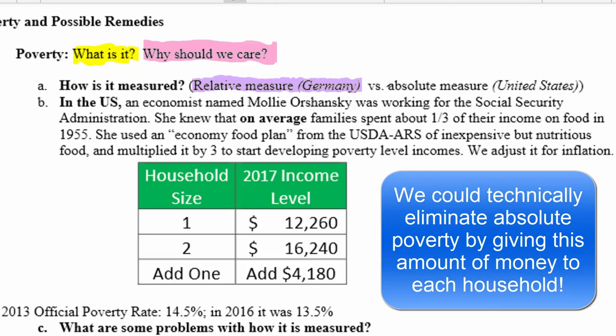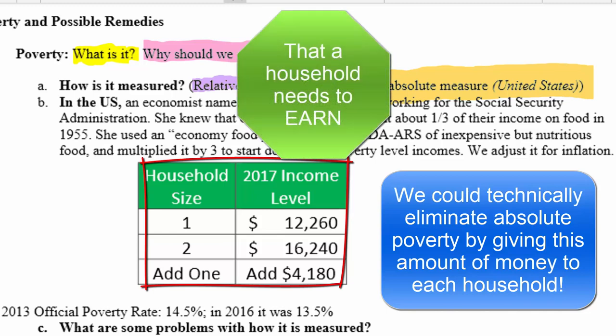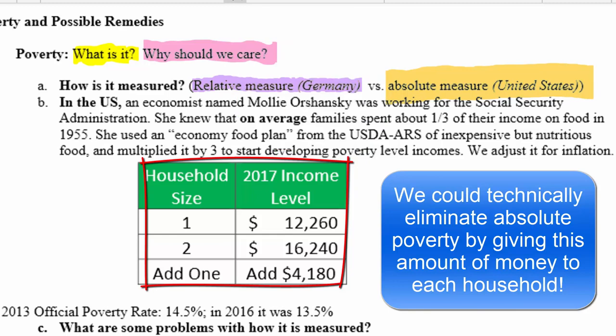In the United States, we use an absolute measure of poverty. An absolute measure means we calculate some amount of money that a household needs based on its size. If the household has less than that amount, it is in poverty; if it has more, it's not in poverty. When you come up with an absolute measure, you have to understand how it was calculated and how we arrived at this number.